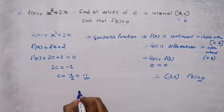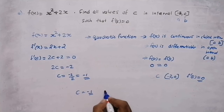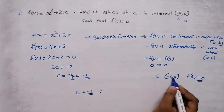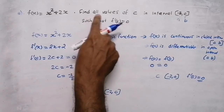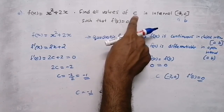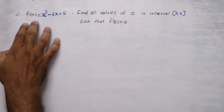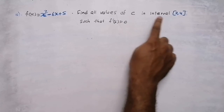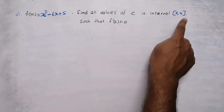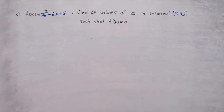Thus we found the value of c as −1, and −1 belongs to the interval (−2, 0). Now it's your turn — do this problem: f(x) = x² − 6x + 5. Find all values of c in interval (2, 4) such that f'(c) = 0. Give your answer in the comment section.